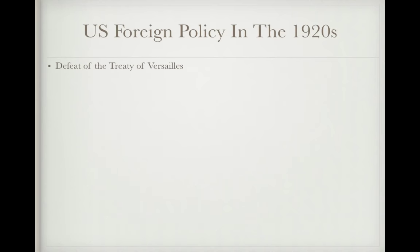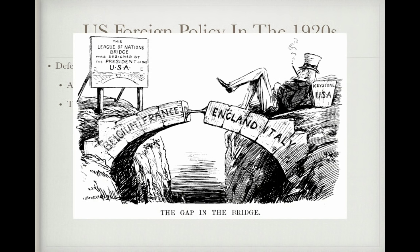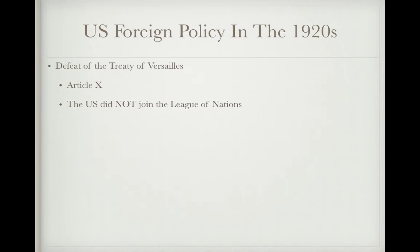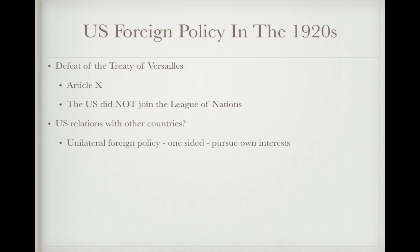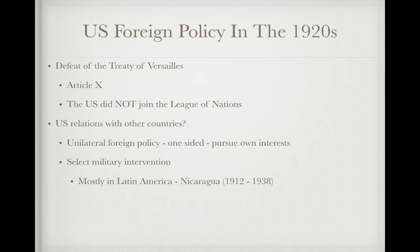Regarding U.S. foreign policy in the 1920s: the Treaty of Versailles was defeated due to Article 10 and the creation of the League of Nations, which the U.S. did not join. A political cartoon depicts a bridge with a missing keystone labeled 'USA' — the League was designed by President Wilson, but the U.S. never joined. The U.S. followed a unilateral foreign policy, pursuing its own interests rather than forming alliances, and conducted selected military interventions mostly in Latin America.